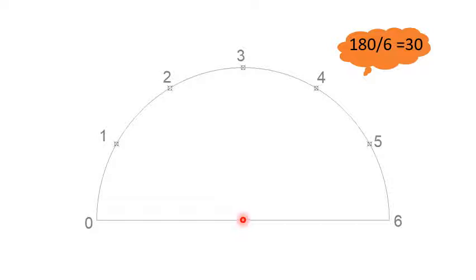So, with your protractor, you can place your protractor at the center there and measure 30 degrees, another 30, another 30, like that until you reach 180 degrees.